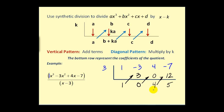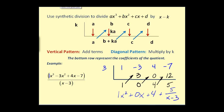These are the coefficients and the remainder of our quotient. Since we started with a degree three polynomial divided by a degree one, our quotient would be one x squared plus zero x plus four. This is our remainder, so we'd have plus five over the divisor, x minus three. We would not want to leave the zero term or the leading coefficient of one explicit.